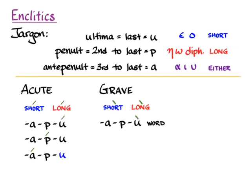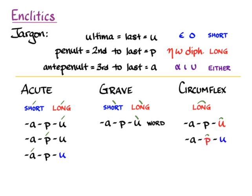That's when there would have been an acute on the last syllable of a word if there were a pause, but it switches to a grave if there is a word afterwards. A circumflex can only appear on a long syllable. It can appear on the last syllable of a word if that syllable is long, or on the second to last — the penult — if that syllable is long and the last syllable is short. So those were our basic rules for accent.